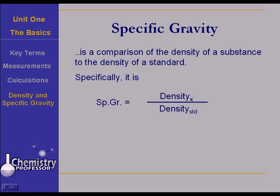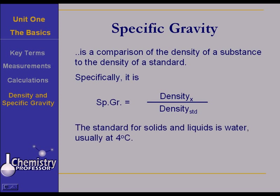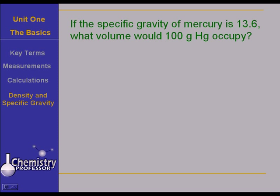Let's try a problem. If the specific gravity of mercury is 13.6, what volume would 100 grams of mercury occupy? Well folks, that's easy. 100 grams of mercury, and the 13.6 specific gravity tells us, since mercury is a liquid, that mercury has a density of 13.6 grams per milliliter. So it's 100 grams times a milliliter over 13.6 grams. Those units cancel very nicely, and we get 7.35 milliliters.